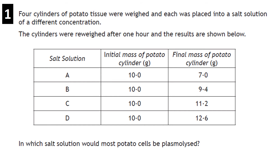Here are some Unit 1 problem-solving past paper questions for extra practice. Question: four cylinders of potato tissue were weighed and placed in salt solutions of different concentrations, then re-weighed after one hour. In which solution would most potato cells be plasmolysed? If plasmolysed they're losing water, so there's a decrease in mass — the answer is A, which shows the biggest decrease in mass.